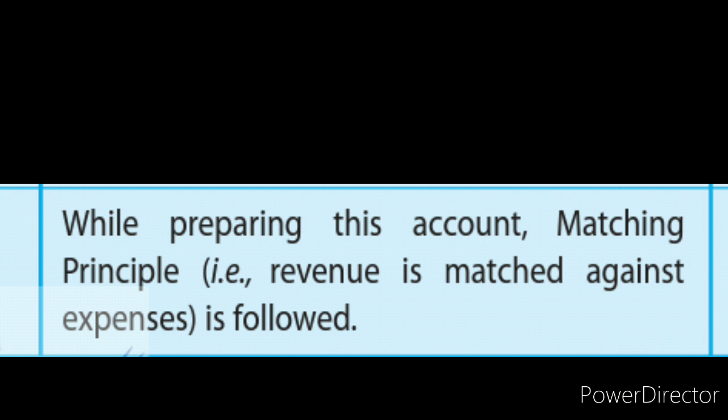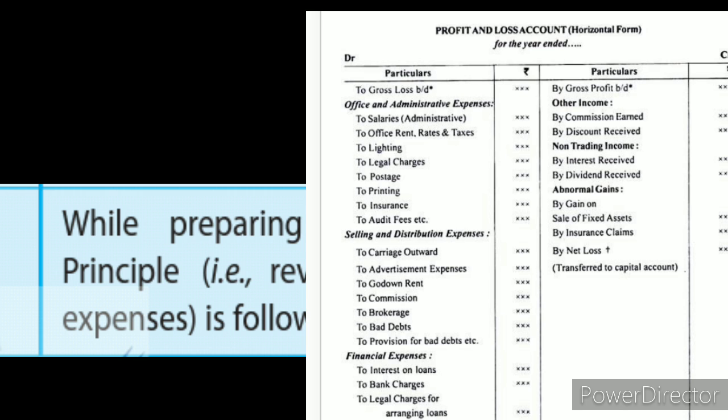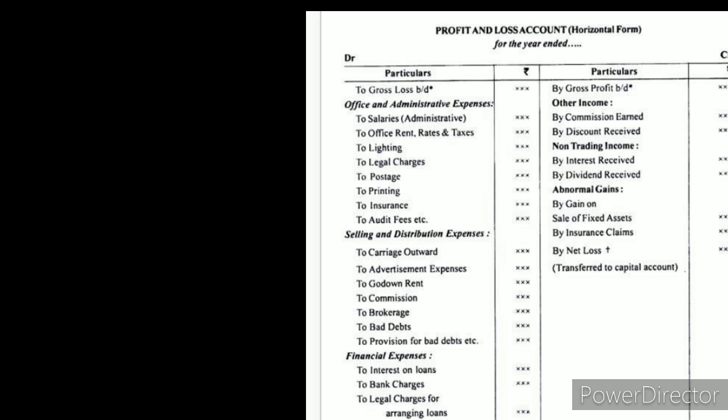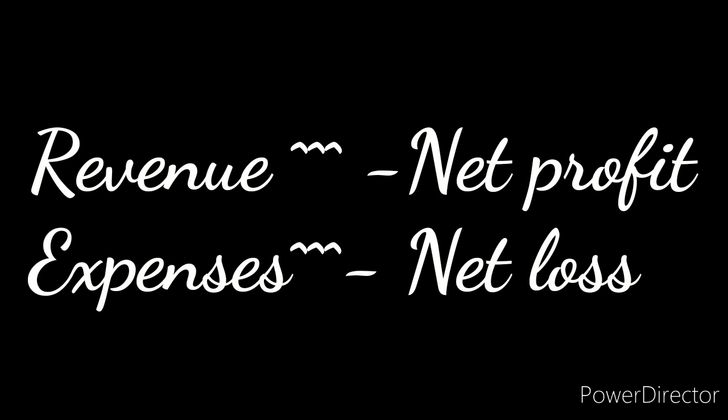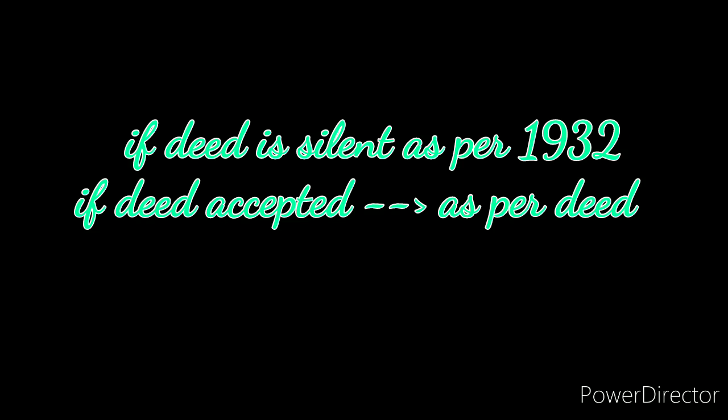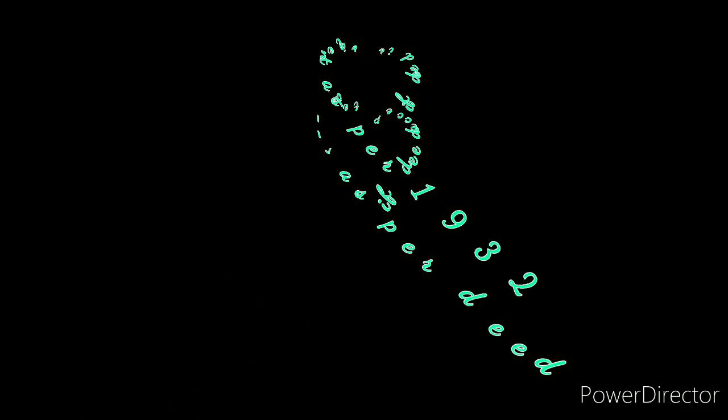Fifth difference — matching principle. While preparing the Profit and Loss Account, the matching principle is followed: revenue is matched against expenses. Revenues are entered on the credit side and expenses on the debit side; if revenues are more than expenses, there is net profit. For the Profit and Loss Appropriation Account, the matching principle is not followed and is not applicable. If profit is available and the deed provides for it, items are given; if the deed is silent, they won't be.